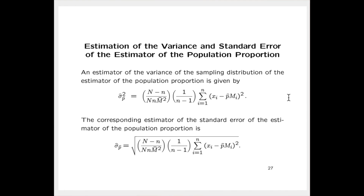On slide 27 we have an estimator of the variance of the sampling distribution of p-hat. It's given by the expression at the top of the slide, and on the right-hand side you'll see that it involves a sum of squared differences between the x sub i's and the quantities p-hat times cap M sub i.